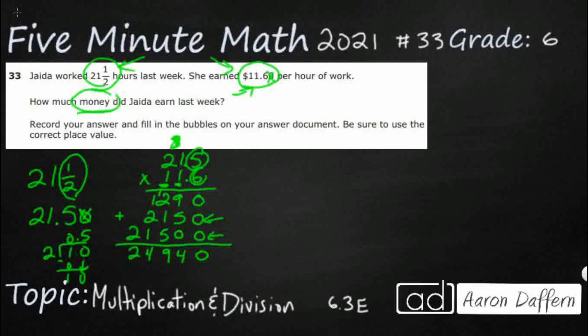Now, we've got one, two digits behind the decimal to begin with. So, let's bring the decimal over one, two. So, it looks like our answer is going to be $249.40.